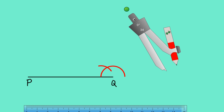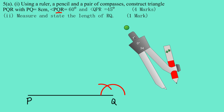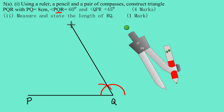Now I'm going to draw a line from point Q passing straight through the point of intersection of the two arcs. I don't know exactly where this line will stop yet, so I'll extend it upward. This gives us our 60 degree angle — that's how you construct a 60 degree angle.